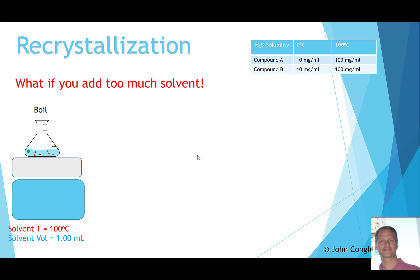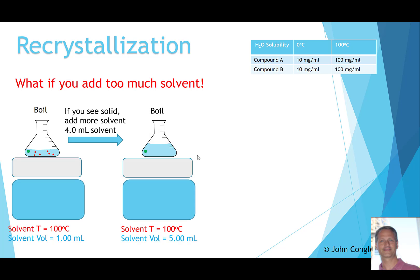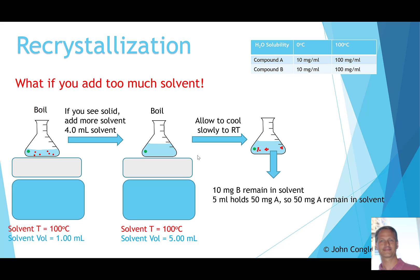What if you add too much solvent? Say you already have 1 milliliter and see a tiny crystal, so you add 4 more milliliters for a total of 5 milliliters. Everything dissolves, but when cooled to room temperature, 5 milliliters can hold 50 milligrams of A in solution. So your collected solid drops from 90 milligrams to only 50 milligrams — a significant yield loss. Adding too much solvent is a common mistake that substantially reduces your yield.